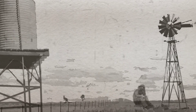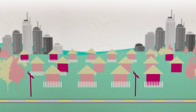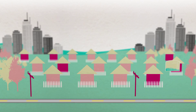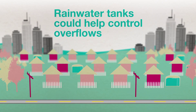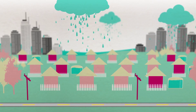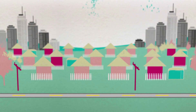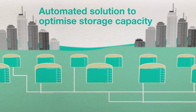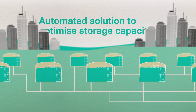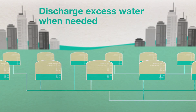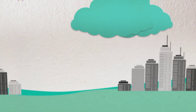Rainwater tanks, once traditionally a landmark of the Australian outback, are now a common feature in urban communities. 26% of all residential households now have systems installed. It has long been viewed that rainwater tanks could potentially play an important role in controlling overflows during peak events as critical mass in urban areas occurred. The challenge was to find an automated solution that could optimise the storage capacity of hundreds of tanks in a catchment, allowing time to discharge excess water when needed and ensure the network of tanks remain operational at all times.